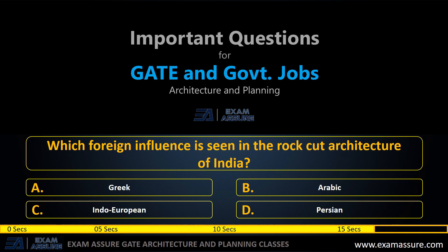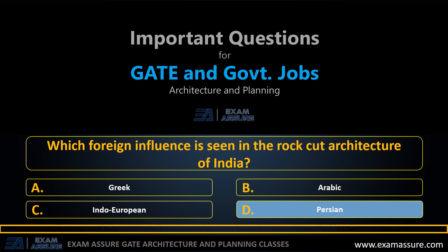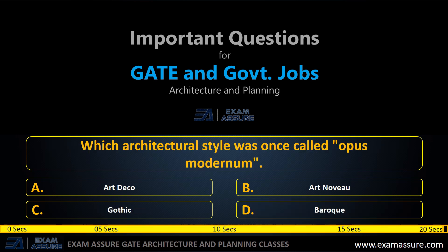Next question: which foreign influence is seen in the rock-cut architecture of India? Option A: Greek, option B: Arabic, option C: Indo-European, option D: Persian. The correct answer is option D: Persian.